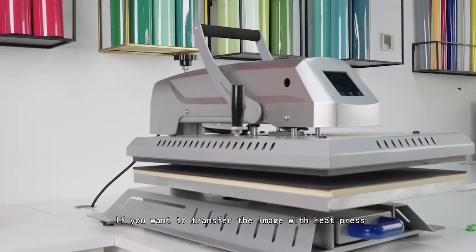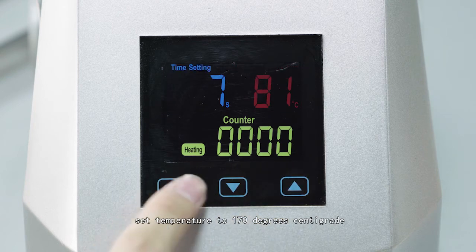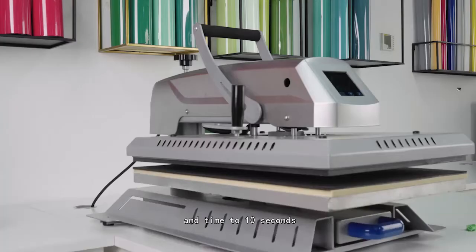If you want to transfer the image with heat press, for dark transfer paper, set temperature to 170 degrees Celsius and time to 10 seconds.